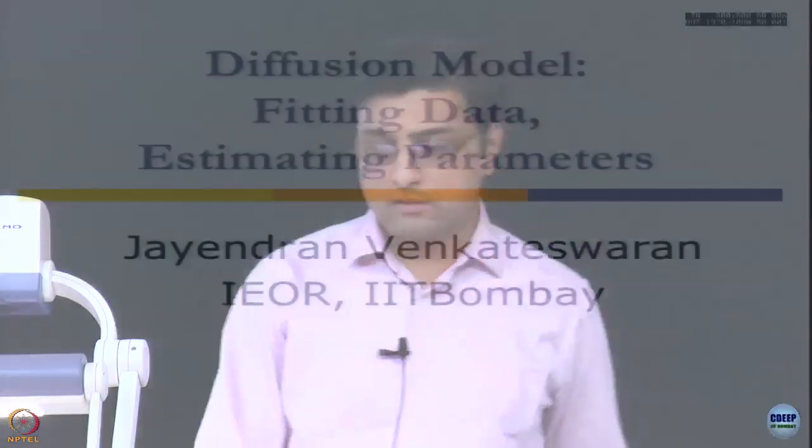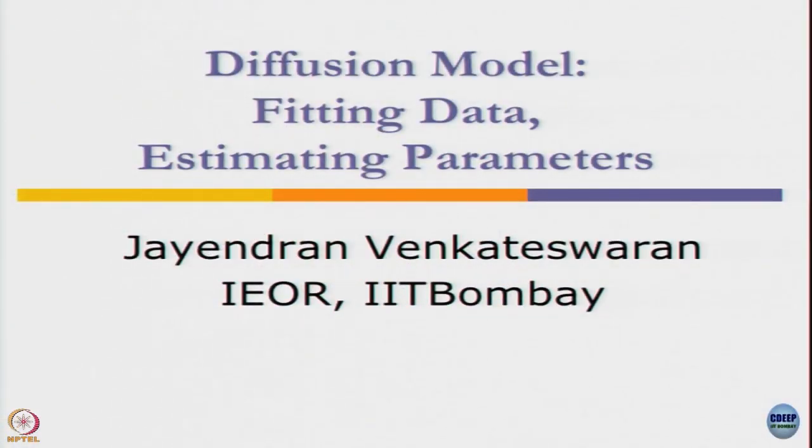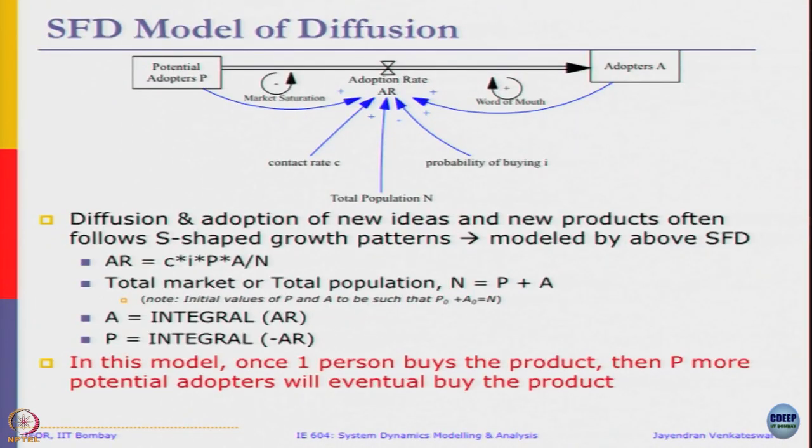In today's class, we will be taking a look at diffusion models and a specific example on how we can model some existing scenarios and estimate parameters in diffusion models. We have seen a stock flow representation of the diffusion model where we divide the total population into potential adopters of the product and adopters of the product. An adoption rate or sales rate will move people from potential adopters to adopters, driven by the factors of contact rate as well as probability of buying i.